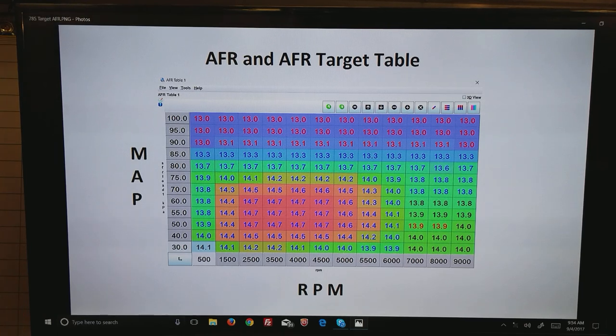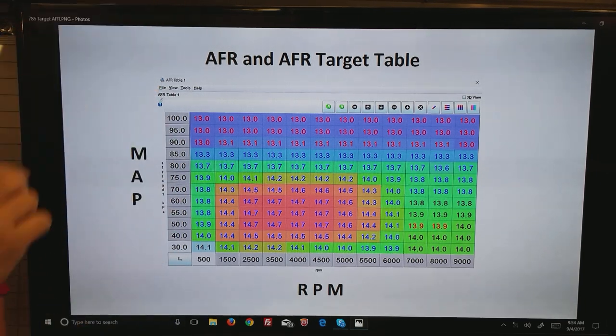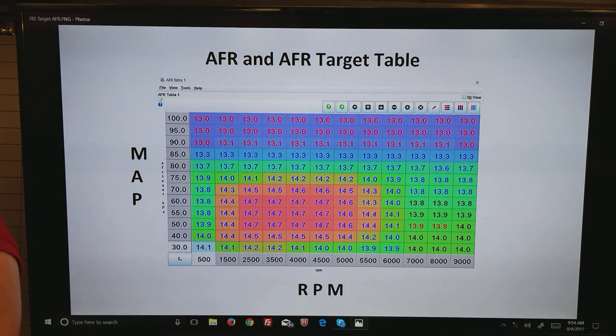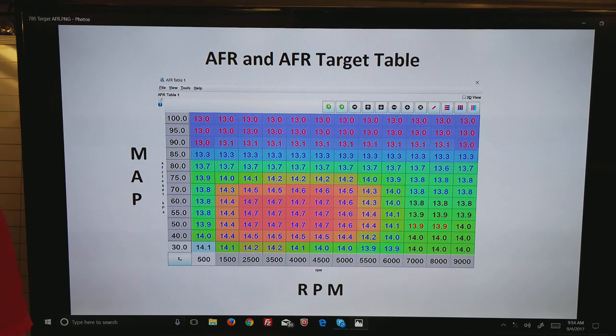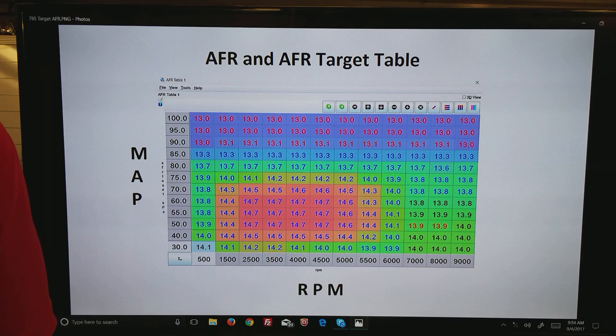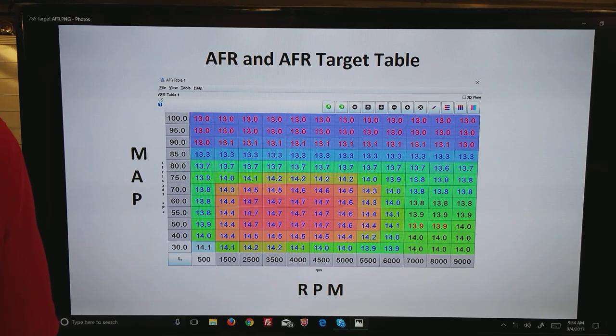Basically stoichiometric is again 14.7 AFR. As we get to a manifold air pressure of 100, or full throttle, you want to go to a ratio of about 13:1 on a naturally aspirated motor. On a supercharged motor at 200 kPa, if this table was taller or rescaled, you might be in the 12 AFR range. Remember these numbers that I'm giving you are all gasoline. As you get into alcohol and other such things, the numbers do change.